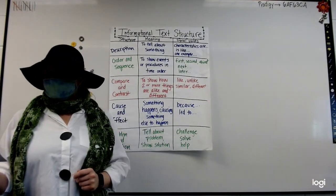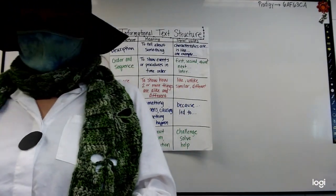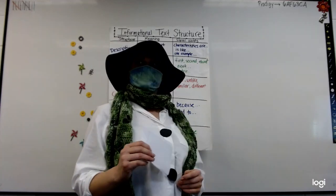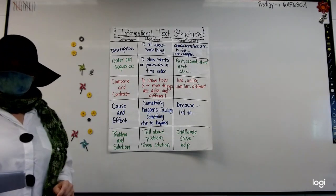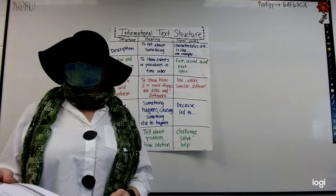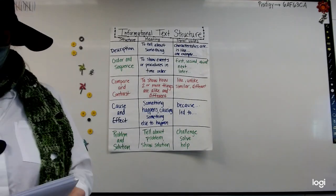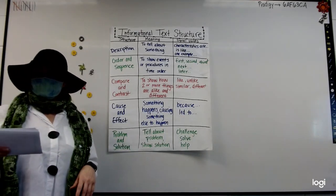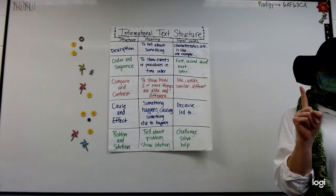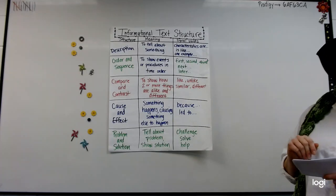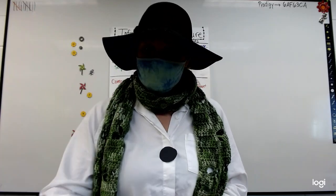To tell about how a firefly is able to create its own light. Angie? Description. Description, good — we're just describing. To examine the differences between Arctic animals and Antarctic animals. Chloe? Compare and contrast. Compare and contrast, good. To describe what happens to your teeth if you eat too much sugar. Noah? Cause and effect. Cause and effect — they didn't give us a solution, did they? Last one: to look at a polar bear's physical features, its food preferences, and its habitat. Zoe? Do we have just one animal? Polar bear. If we're only talking about one animal — description. There you go. So you all will have some practice on that. Have a good day.